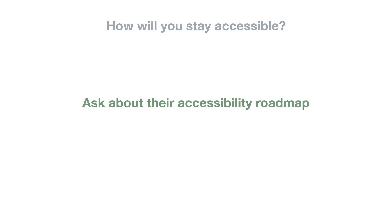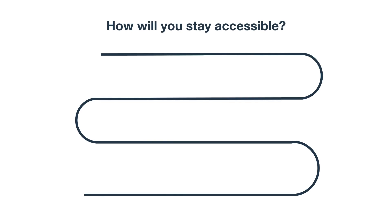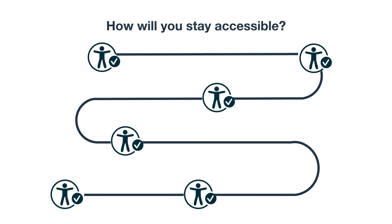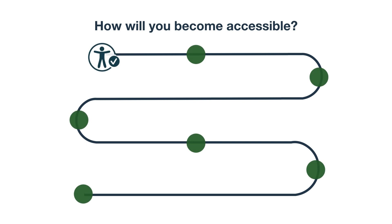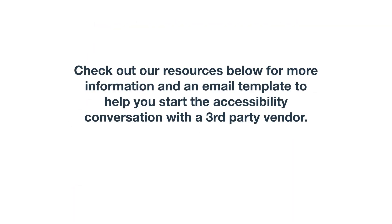Lastly, ask about their accessibility roadmap. You want to understand how they'll stay accessible. Or, if they aren't accessible right now, understand if they have a plan on getting there. Check out our resources below for more information and an email template to help you start the accessibility conversation with a third-party vendor.